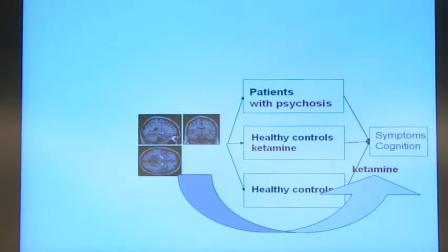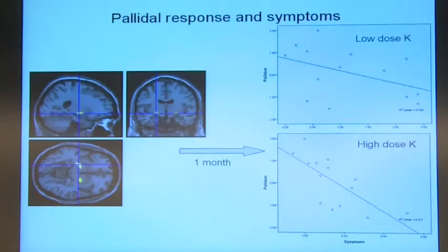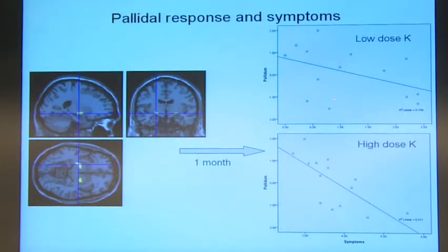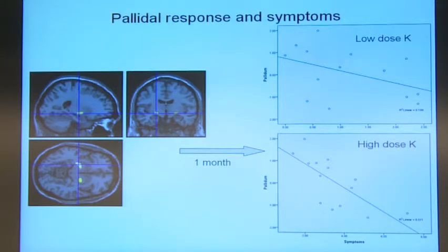Looking at the symptoms experienced on ketamine, at low-dose the tendency is not quite significant, so that's too noisy to interpret. But at high-dose it's more convincing. What this suggests is that people who show the least response to outcome-specific responding — the least Pavlovian instrumental transfer, the ones who are neurally least sensitive to this type of learning — are the ones most likely to get positive symptoms when given ketamine. So there's a relationship there, assessed a month later.